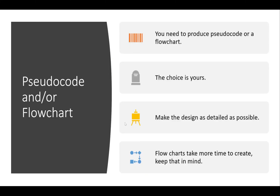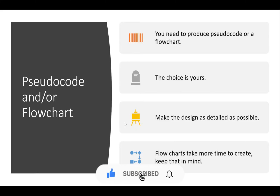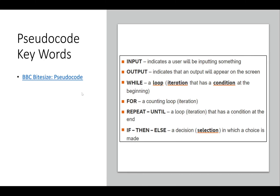You need to produce pseudocode or a flowchart — the choice is yours. Make the design as detailed as possible, don't miss anything, spend time on it, and make sure you go through every single thing. Flowcharts take more time to create. Personally, in this exam — which is 12 hours, and that sounds like a lot but it isn't — I wouldn't waste time on a flowchart. As much as I think flowcharts are better and prettier, I would choose pseudocode. Simply open Word and type your pseudocode.